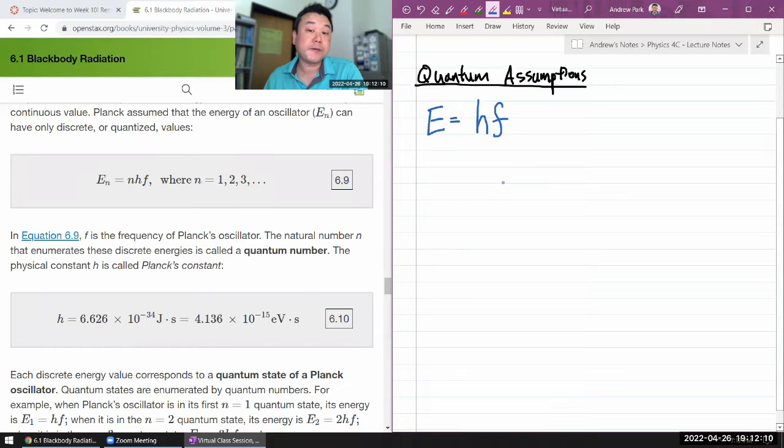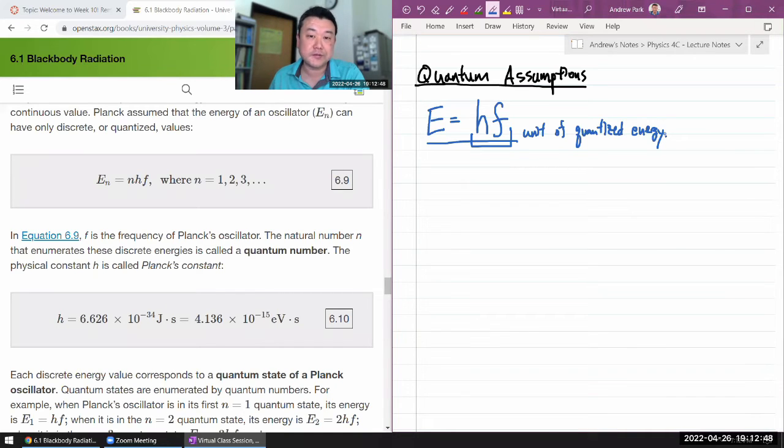It's fundamental that there are several different phenomena where you can really only fully explain them by assuming a quantized discrete amount of energy transferring. This is the unit of that quantized energy. Einstein extended this idea of Max Planck's to posit the existence of photons, particles of light that he used to explain the photoelectric effect.